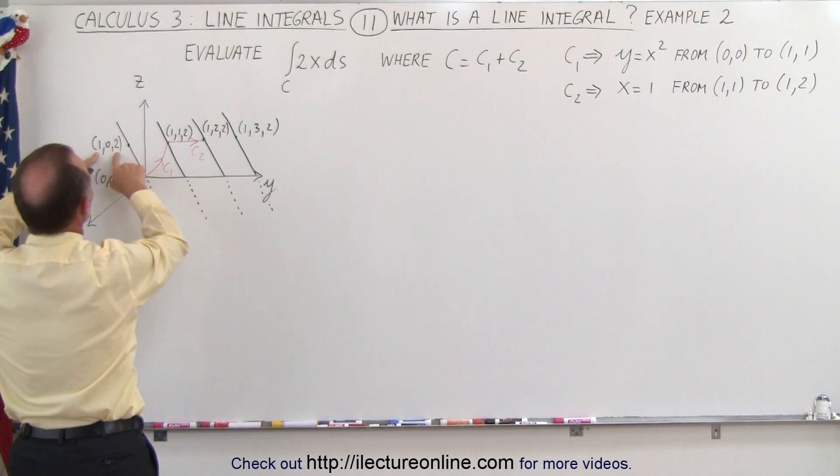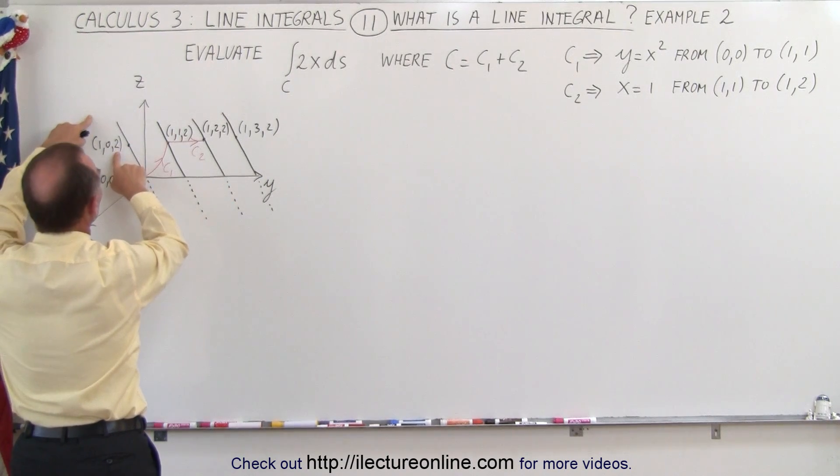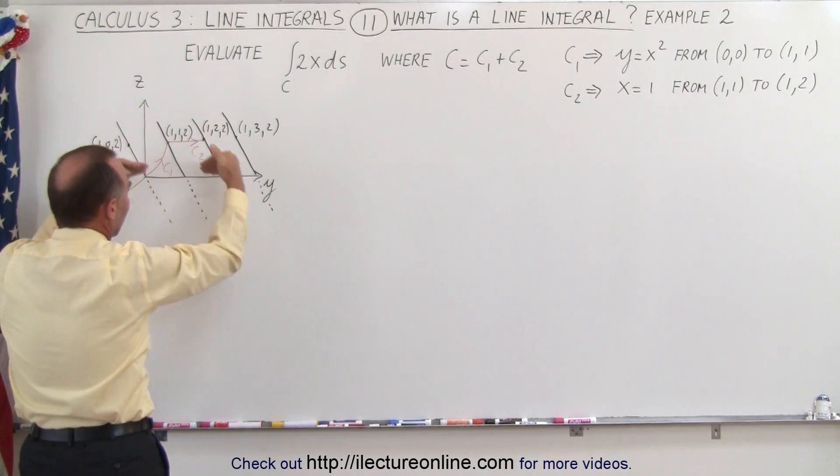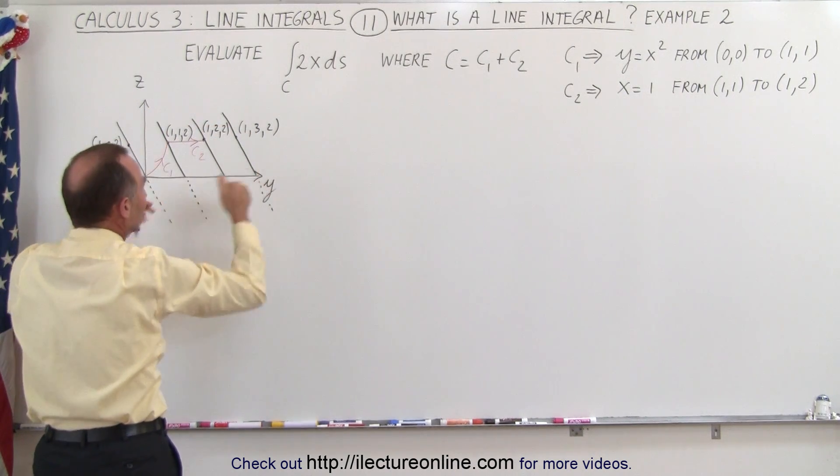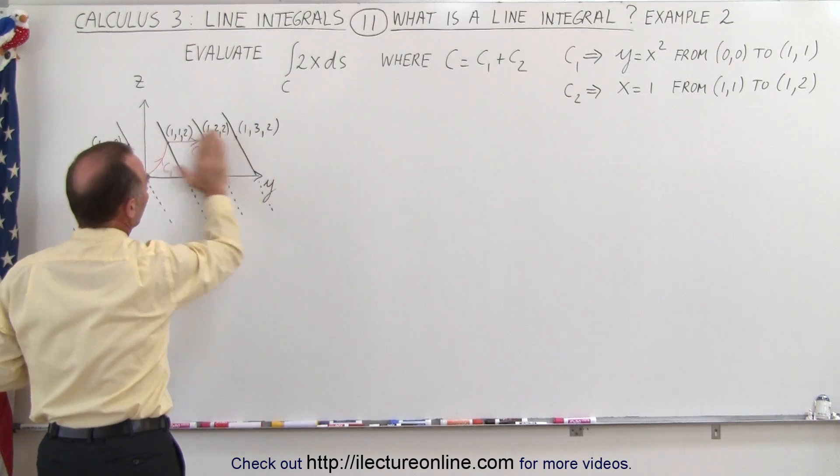When x equals 1, z is equal to 2. When x equals 2, z is equal to 4. You can see here, as x becomes negative, z becomes negative as well, and no change in the y direction.